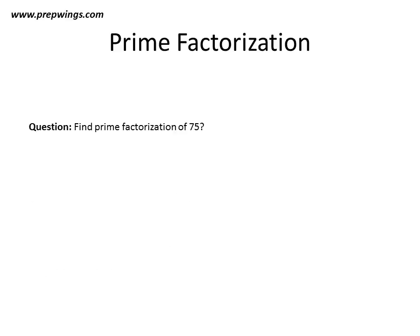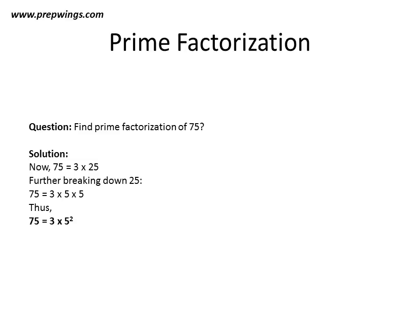Now we will look at another question: find the prime factorization of 75. For the solution, 75 can be written as 3 into 25. Since 3 is already a prime number, we don't need to break it down further. So 25 is nothing but 5 into 5. We write 75 as 3 into 5 into 5, which is 3 into 5 squared. Thus the prime factorization of 75 is 3 into 5 squared. Thanks a lot for watching this video.